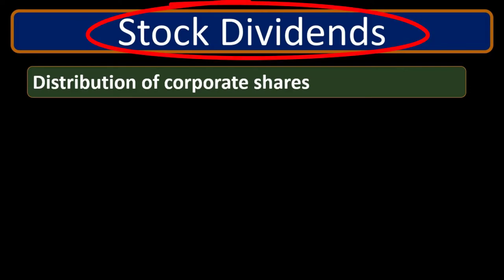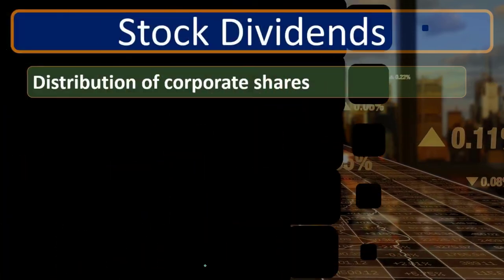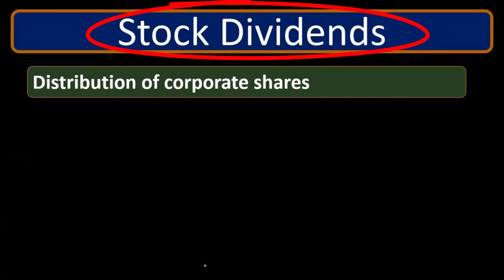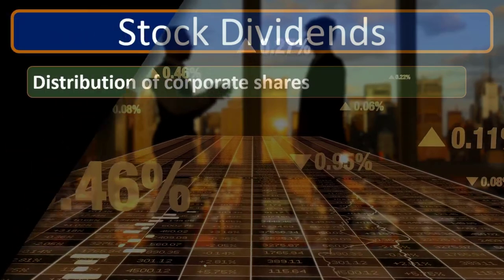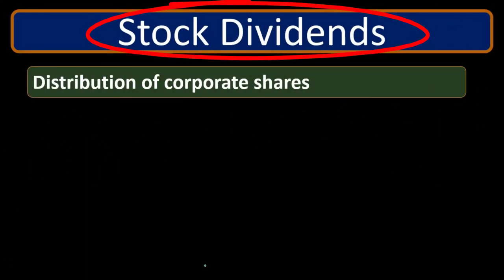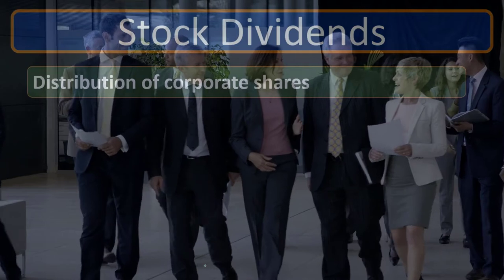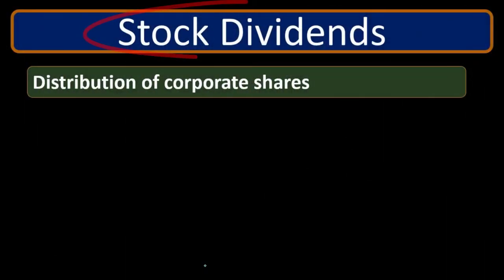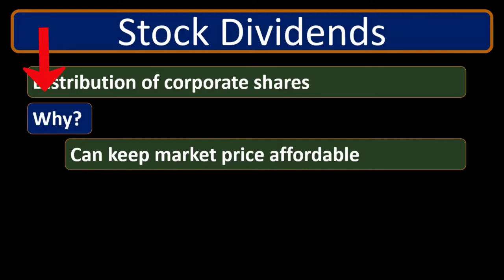When a stock dividend is given, the pre-existing owners receive more stocks. That means they're getting more value in the company, more voting value, and more equity. In essence, the stock dividend transfers from the retained earnings of the company to the investment side — we're allocating more stock without getting new investment from owners. So the owners are getting more stock without putting cash or other assets into the business. Why might a company decide to give a stock dividend rather than paying a cash dividend?